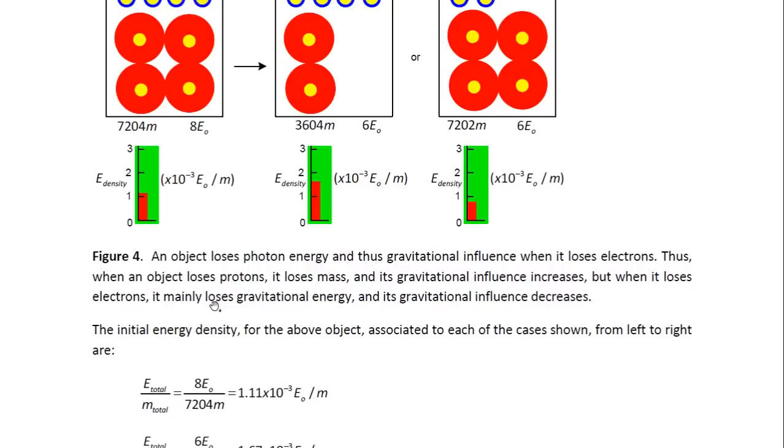So, this means that an object, when it loses the protons, it loses mass, and its gravitational influence increases, as shown, because the energy density goes up. But, when it loses electrons, it mainly loses gravitational energy, and its gravitational influence decreases.